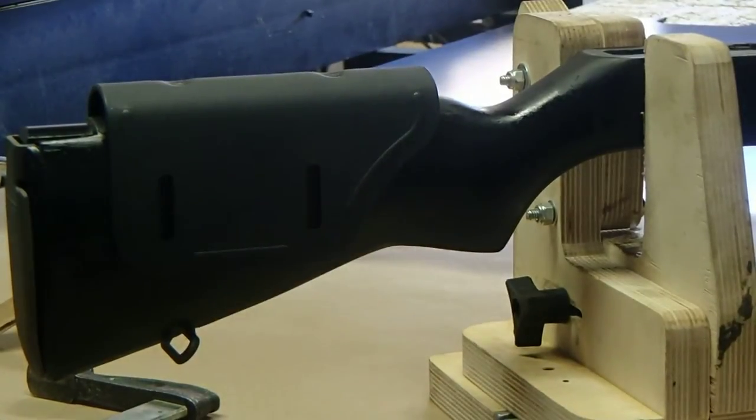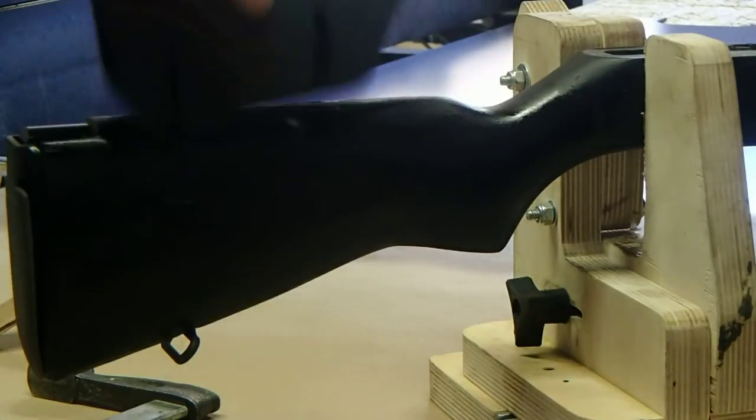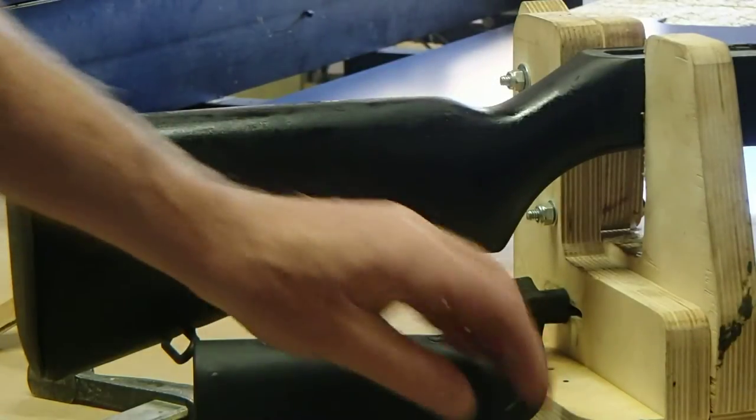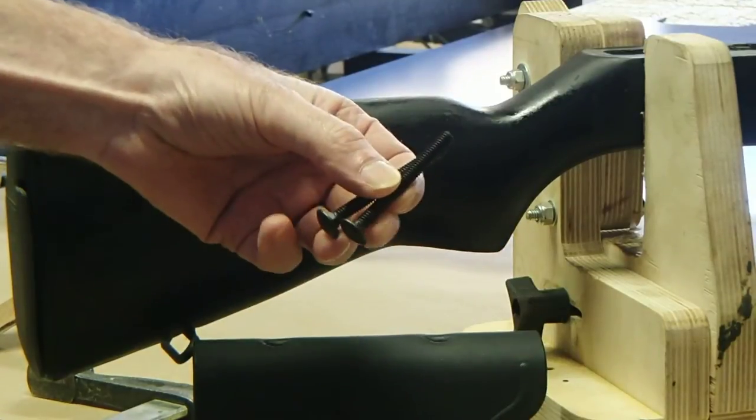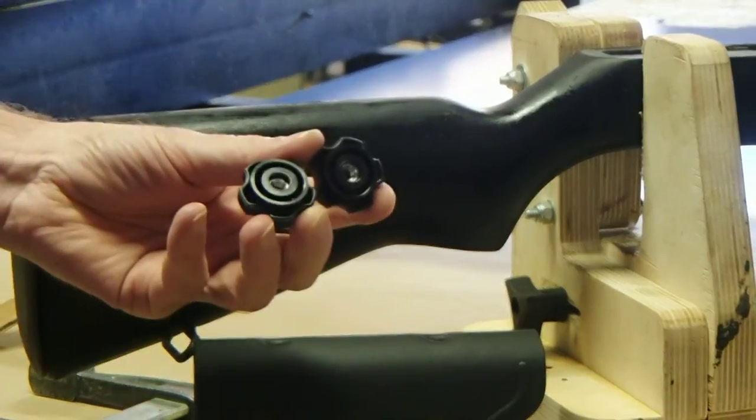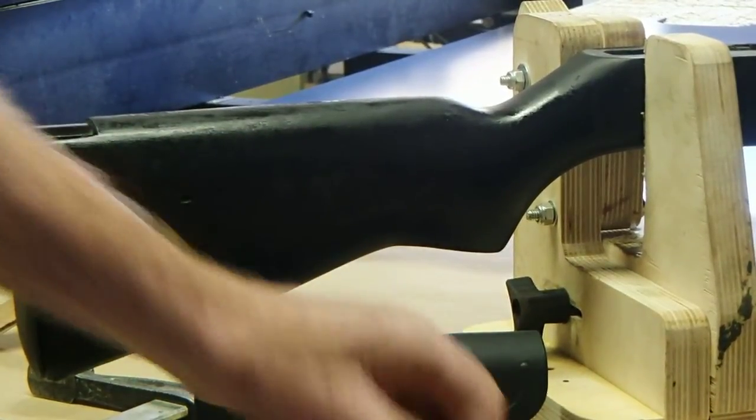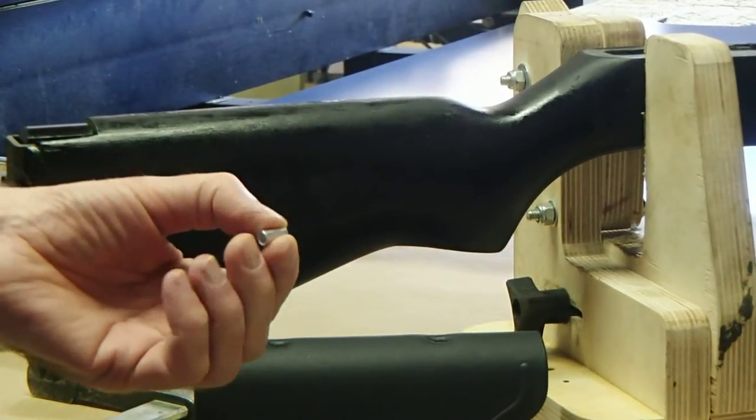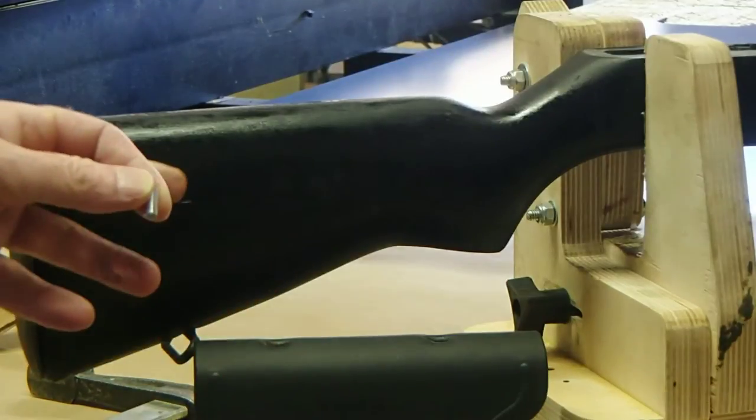I'm going to show you the correct way to install a TACPRO cheek-rest on your M14 rifle. What you'll need is a TACPRO cheek-rest which comes with two stainless steel bolts that are black oxide coated, two locking knobs, and a drill bushing to help keep the drill from moving around on the stock.